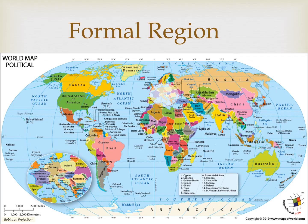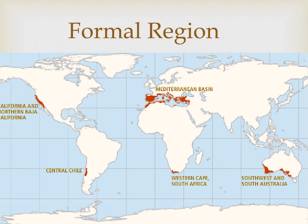The political boundaries established between countries as well as internal divisions within countries are considered formal regions. Boundaries are established and there's uniformity within that boundary — for example, with national identities or citizenship. A physical formal region could be a region that shares a particular climate, like the Mediterranean climate with hot, dry summers and cool, wet winters.